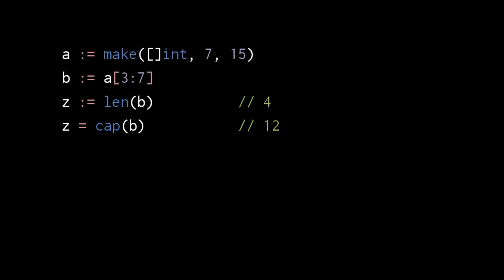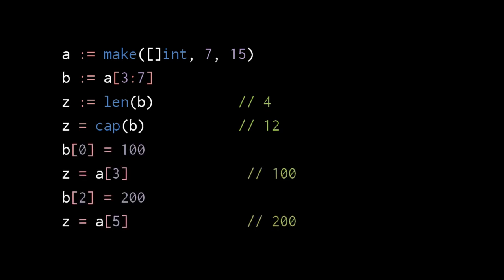When using the subscript operator — the square brackets — we can put inside two numbers separated by a colon. This is the range operator, which returns a new slice rather than a single value. Here, a subscript 3:7 returns a new slice which represents indexes 3 up to but not including 7 of the original slice. So this new slice has a length of 4. The capacity of the new slice is 12 because it runs from index 3 to the end of the underlying array, which has a size of 15. The new slice shares the same underlying array as the original, but the indexes are skewed. Index 0 of the new slice is the same as index 3 of the original, index 1 is the same as index 4, index 2 is index 5, and index 3 is index 6. So assignment to index 0 of the new slice effectively modifies index 3 of the original, and assignment to index 2 modifies index 5 of the original.